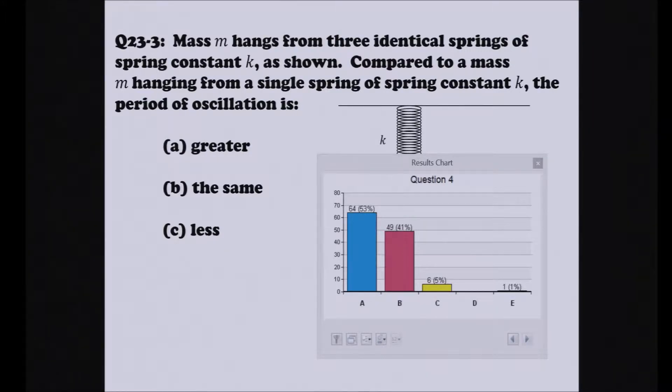All right, let's try this out. I have a spring of spring constant k, and I have three absolutely identical springs. So let's see what happens.